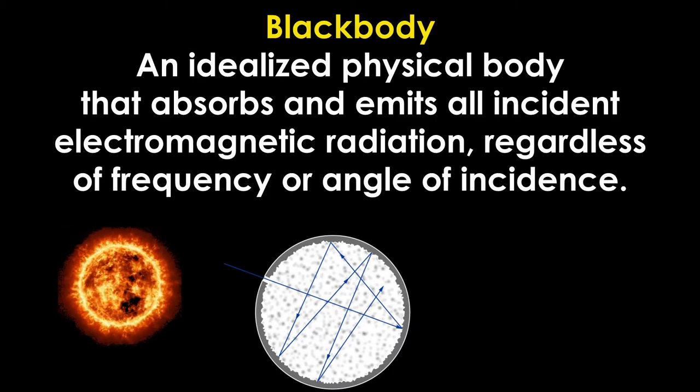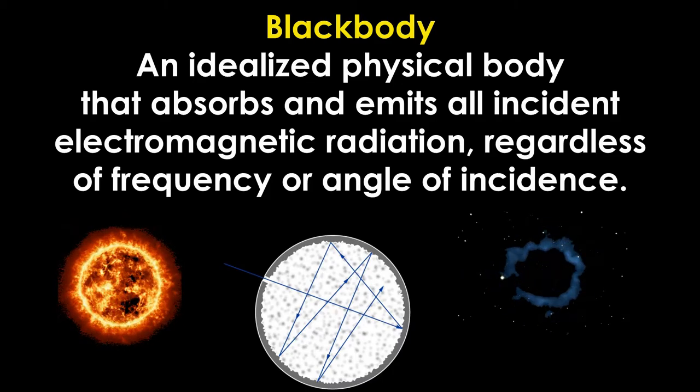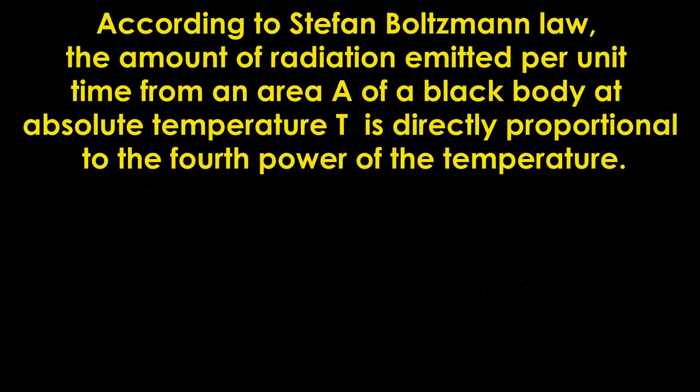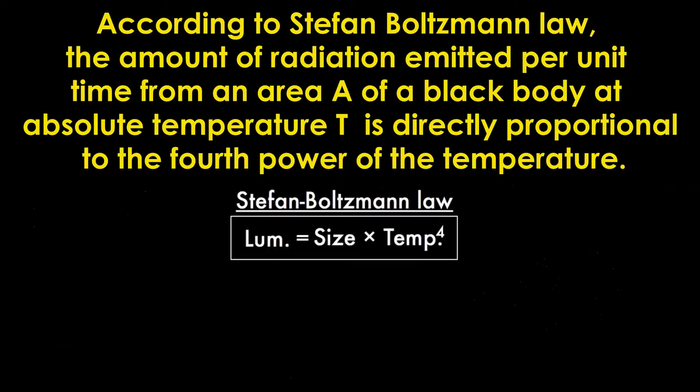Not only the Sun, there are millions of stars which are also examples of black bodies. Let's move to the Stefan-Boltzmann law. According to Stefan, the luminosity of a black body is the product of the size of the black body and the fourth power of the temperature.